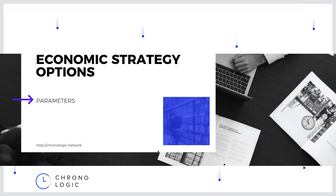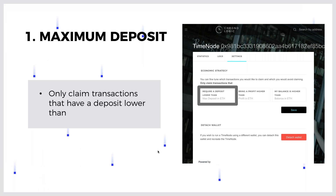These slides come from previous webinars done by Joseph. Since most questions and issues were regarding the economic strategy options, I want to rehearse and explain them again, and then I'll show you on the TimeNode how to set them and how they effectively change the dynamics of the TimeNode. We have three different options for the economic strategy - actually there are four, but we're not going to talk about the fourth one. We'll cover that in the next webinar.